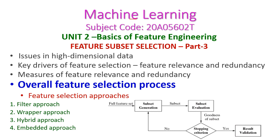In this machine learning class, we will see the last part of feature subset selection, that is part 3. Here we will see the overall feature selection process. In the previous class, we have already seen that the issues in high dimensional data are key drivers of feature selection. So in feature selection, feature relevance and feature redundancy were there, and the measures of those have been completed in our previous class. In today's class, we will see detail about the overall feature selection process.